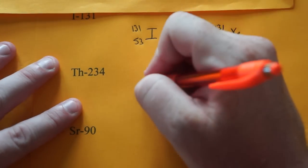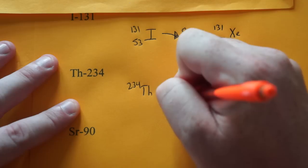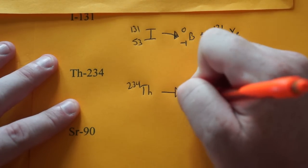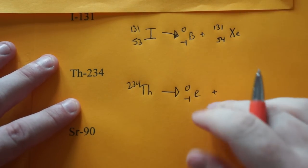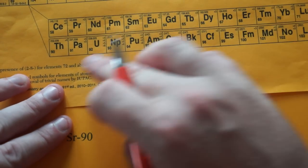Now, we're going to do thorium 234. Same thing. We're going to do a beta decay. I'm going to write it as an E, though, this time. It doesn't matter. They're interchangeable. Whatever is easier for you. And we look up thorium, element number 90.